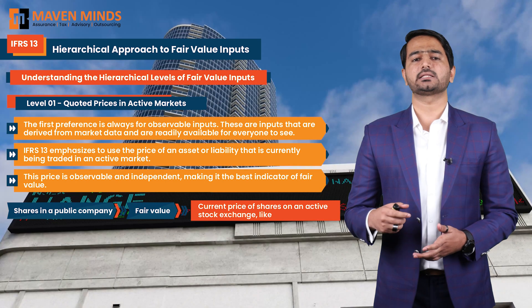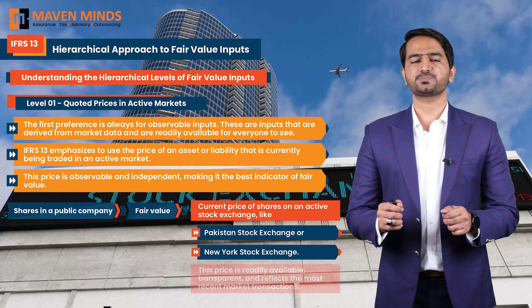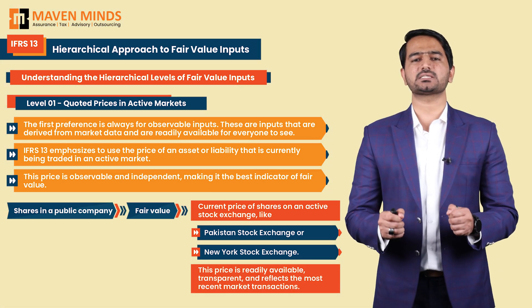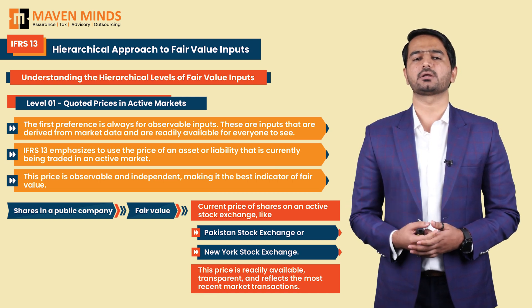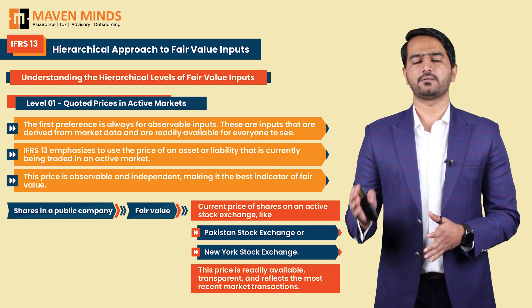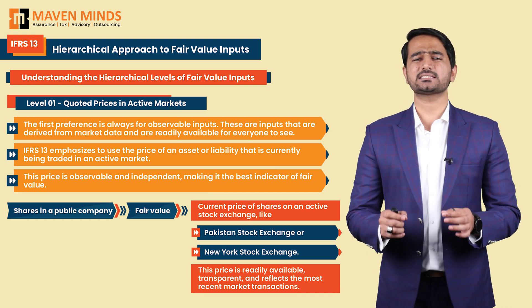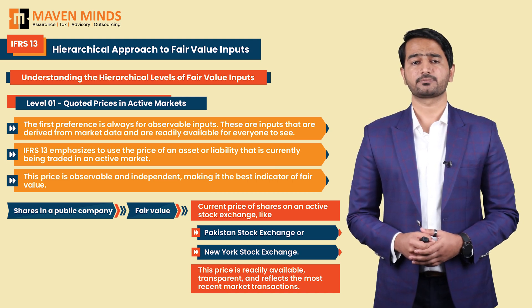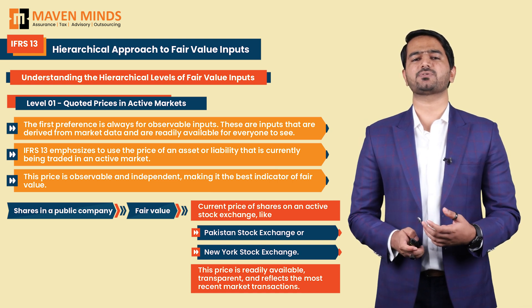You look up the current share price on an active stock exchange like the Pakistan Stock Exchange or the New York Stock Exchange. This price is readily available and transparent. For example, if the current trading price is $100 per share and you own 100 shares, the fair value is simply 100 shares × $100 = $10,000. This is a clear, straightforward application of Level 1 inputs. But what happens if you cannot find a quoted price for your specific asset or liability?